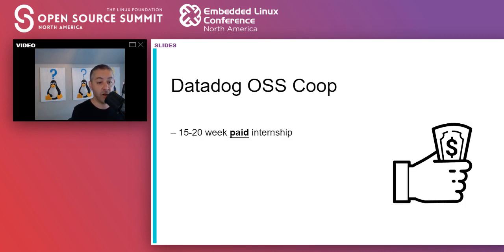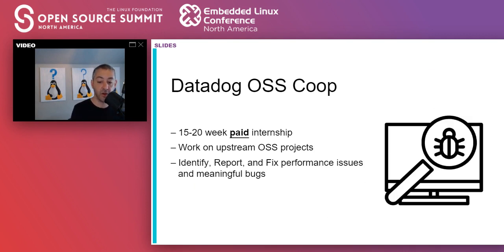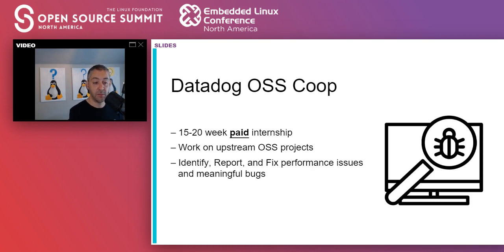What we launched was the Datadog open source co-op program — typically a 15 to 20-week paid internship. An important part is they get full remuneration and full benefits, the same as if they were a full-time employee. They are full employees — there's no different tier for them. Their main goal is specifically to work on upstream open source projects: identify, report, and fix performance issues and meaningful bugs. We skew towards impactful projects — things that are technically interesting for the co-op, but also things that we use as an organization.